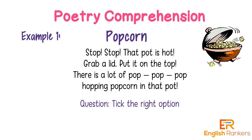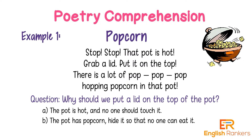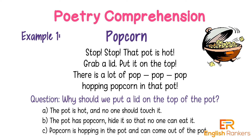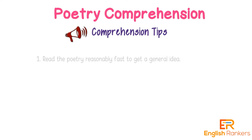Based on the poem, we have the following questions. Question one: Take the right option — (a) a pot is hot, or (b) pot is cold. The answer is given in the first line: the pot is hot. Question two: Why should we put a lid on top of the pot? The answer is (c): popcorn is hopping in the pot and can come out. Lines two, three, and four talk about covering the pot as a lot of popcorn is hopping inside.